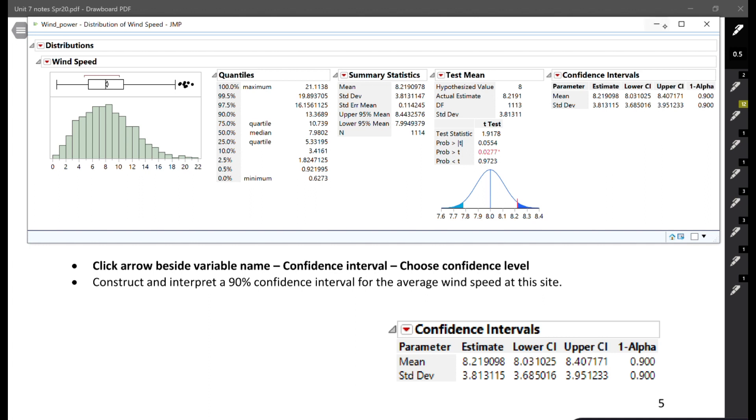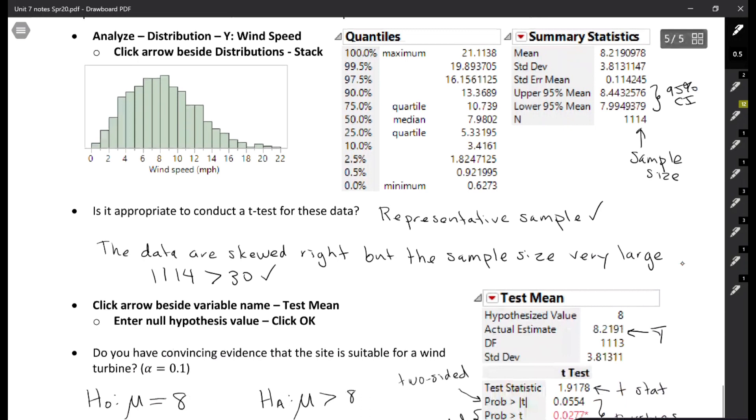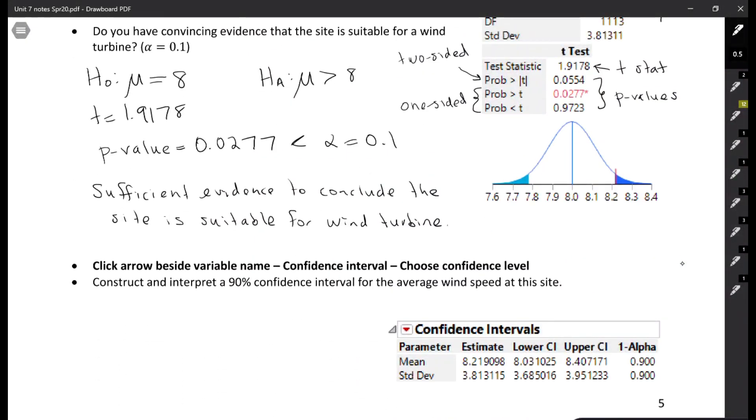You may have noticed that it actually already gave us the 95% confidence interval back at the top. Where it says upper 95% and lower 95%, that's the 95% confidence interval. That comes up by default. But if you want another level, then you have to do this process. We want the confidence interval for the mean. Our confidence interval numbers are given where it says lower CI and upper CI. This 0.9 is the confidence level, reminding us that we picked 90% confidence. If we want to write down our interval, our 90% confidence interval goes from 8.0316 to 8.4072.